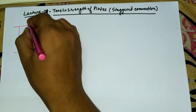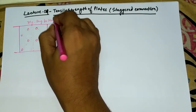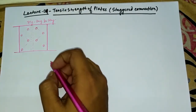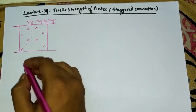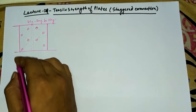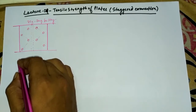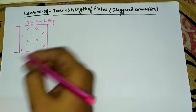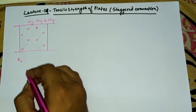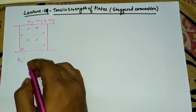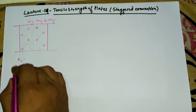Now, due to this inclined length, let us first go through the conventional formula for tensile strength of the plate. The main thing that differs here from chain bolting is that only the net area changes — the rest of the formula remains the same.